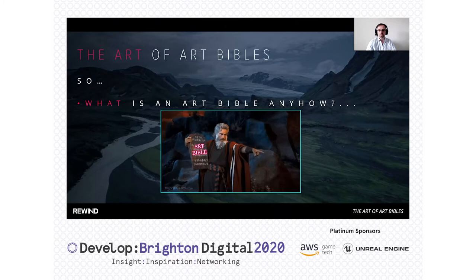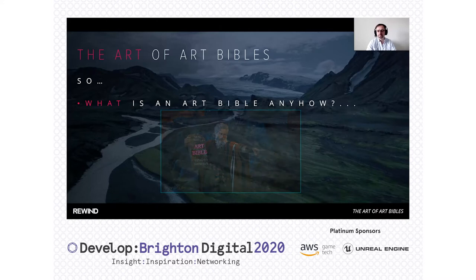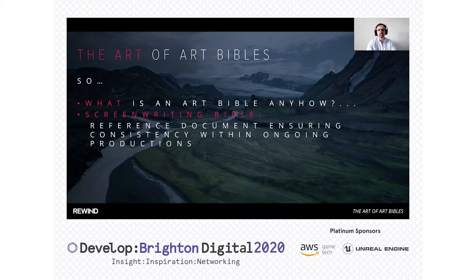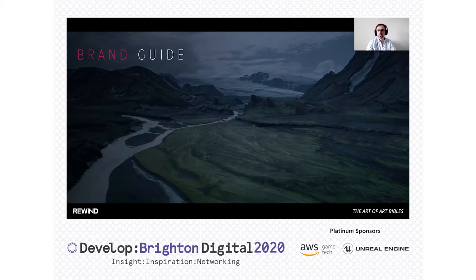First off, what is an art bible? The clue's probably in the name — it is the aesthetic writ to be obeyed. Let's have a look at a couple of related examples. First, let's discuss screenwriting bibles — reference documents that ensure consistency in ongoing television and film productions. And commercial style guides, or brand guides, which define the core visual and aesthetic elements to create differentiated brands. That also sounds rather appropriate.